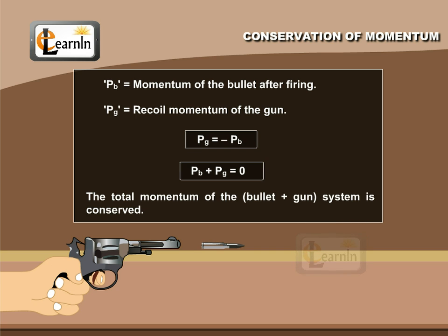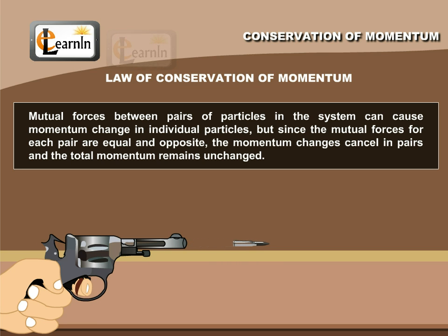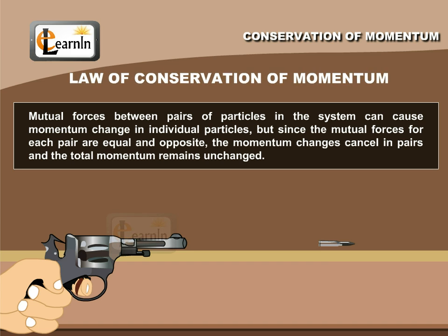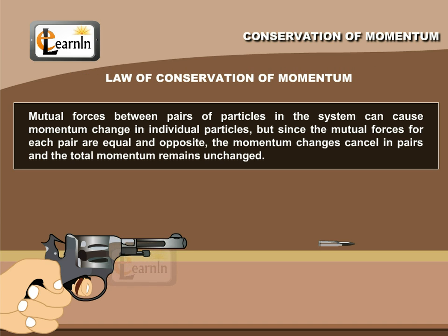In other words, the total momentum of the system is conserved, making it an isolated system, or a system with no external force. Mutual forces between pairs of particles in a system can cause a change in momentum for individual particles, but since the mutual forces for each pair are equal and opposite, the change in momentum cancels in pairs, and the total momentum remains unchanged. This is known as the law of conservation of momentum: the total momentum of an isolated system of interacting particles is conserved.